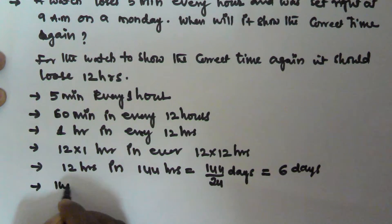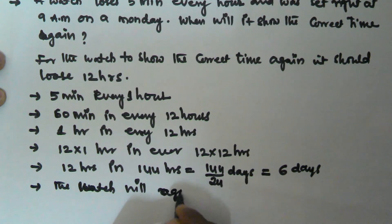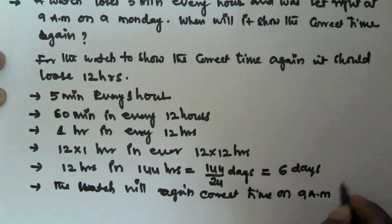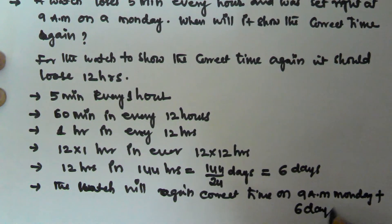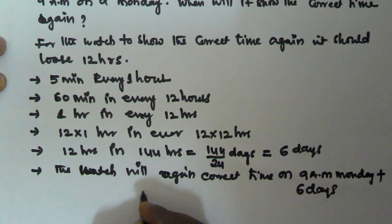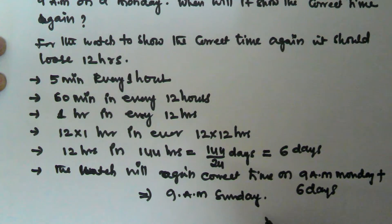That means the watch will show the correct time again on 9 am Monday plus 6 days. 9 am Monday plus 6 days is going to be equal to 9 am Sunday. So next Sunday at 9 am it will show the right time again, if it is losing 5 minutes every hour.